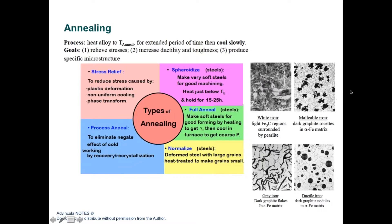As observed by microscopy, different types of annealing result in different domain and grain sizes of iron and carbon alloys, which can be classified as white iron, malleable iron, gray iron, and ductile iron. These terms represent different domain sizes, grain sizes, and morphologies that differentiate the composition of various alloys.